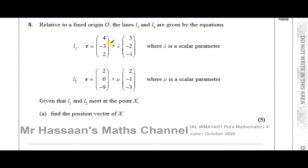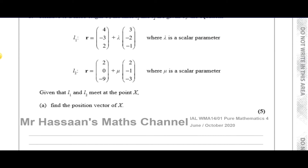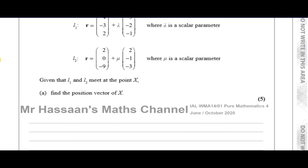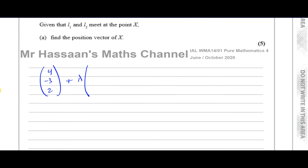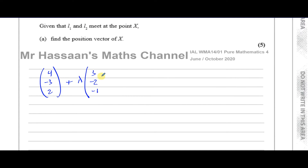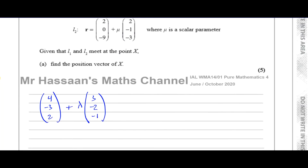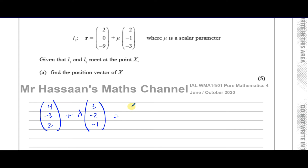So all we have to do is find the value of lambda and mu for which they give us the same position, and then we can find that position by substituting that value of lambda into L1 or that value of mu into L2. Let's first equate the two together: (4, -3, 2) + lambda(3, -2, -1) = (2, 0, -9) + mu(2, -1, -3).